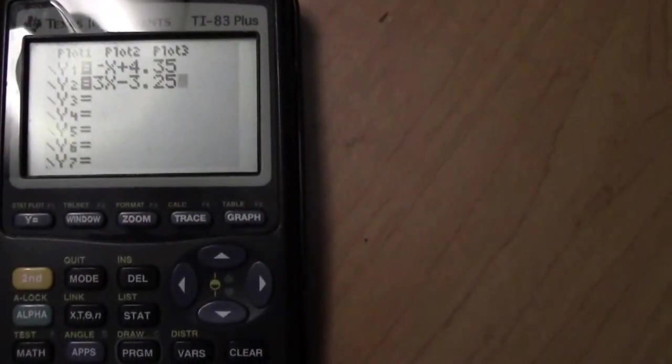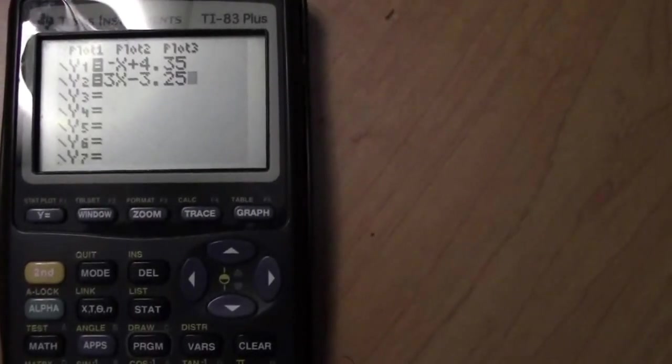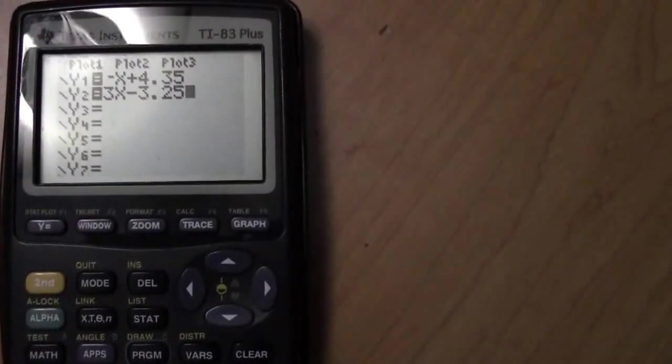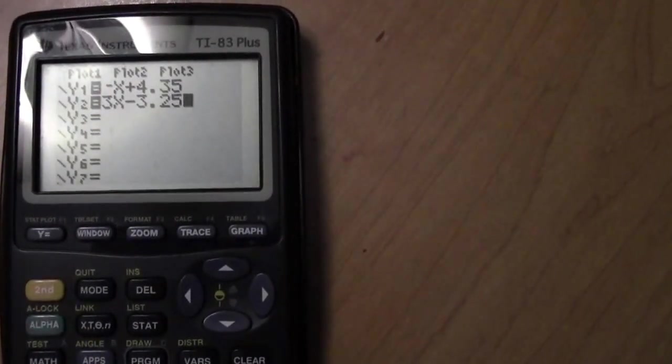You could graph those equations. And since they're not parallel, they would cross each other somewhere. The solution to this system of equations is the ordered pair where they cross.